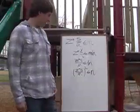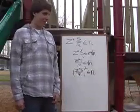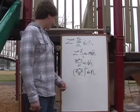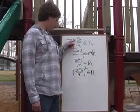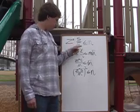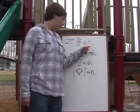Alright, let's start with the process we use when finding standard deviation. Our equation is Z star times standard deviation over the square root of n is less than or equal to the margin of error, or m.